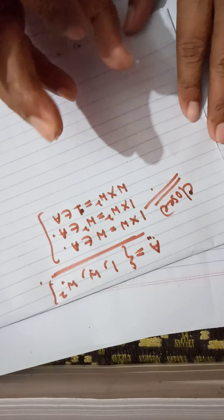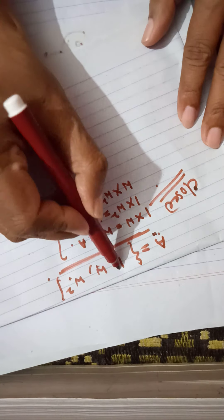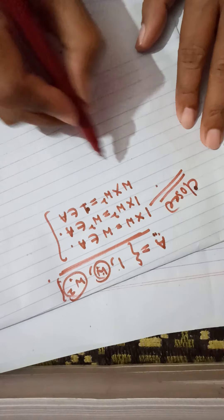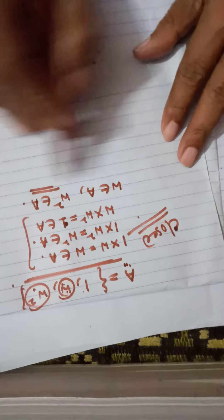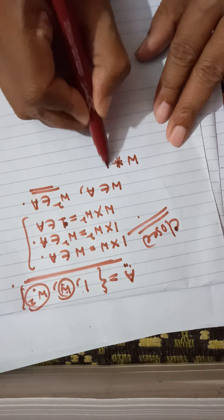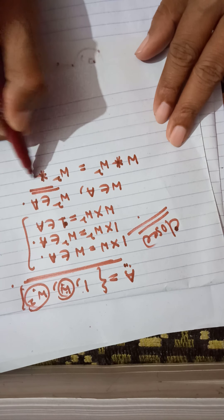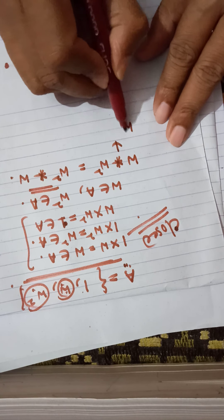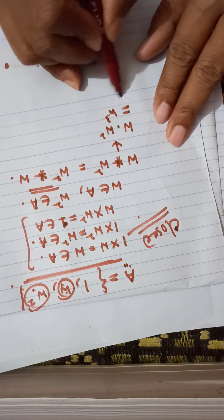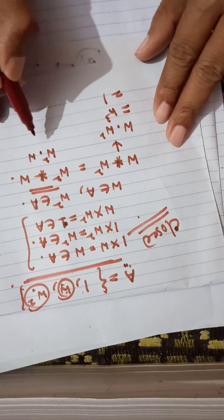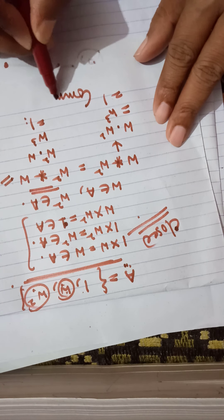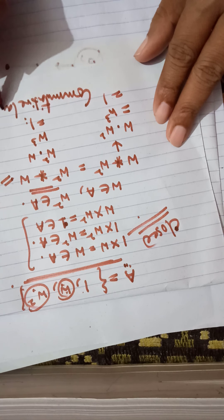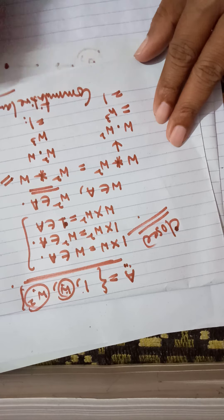Commutative property: take omega and omega squared from A. We check omega star omega² equals omega² star omega. Since omega × omega² = omega³ = 1 and omega² × omega = omega³ = 1, both are equal. So commutative property holds.